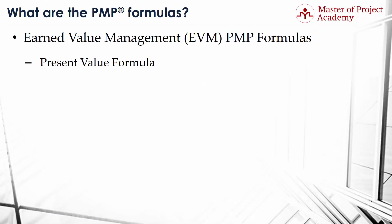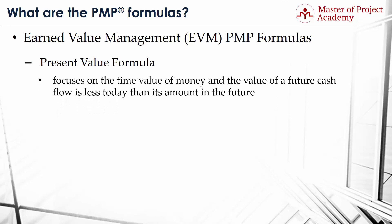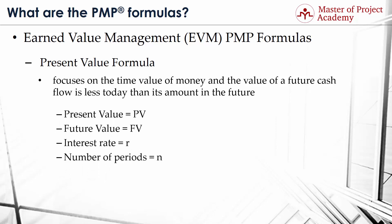PMP formula number 12: Present Value Formula. One of the PMP formulas which focuses on the time value of money — the value of a future cash flow is less today than its amount in the future. It is used in the project selection process. To understand the formula, you need to know: Present Value = PV, Future Value = FV, Interest Rate = R, and Number of Periods = N. Thus, the formula is: PV equals FV divided by the result of (1 plus R) to the power of N.